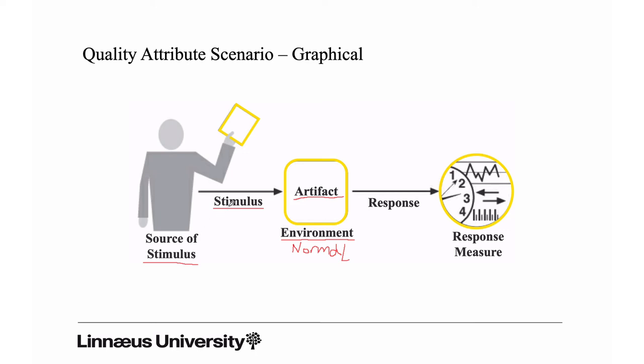So if the user stimulates the system by initiating a transaction and the system is running under normal conditions, then the response should be that the transaction finishes within two seconds. So this model actually can be used to ask the right questions: what can happen, when does it happen, what does the system look like or how does it behave when this stimulus arrives, and what should the response be? It's more a model that helps you to structure your question, to structure your specification.